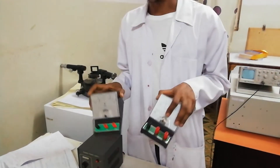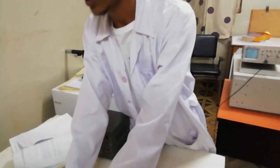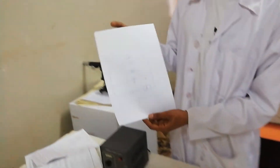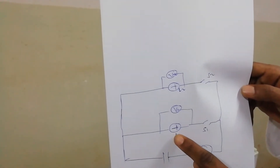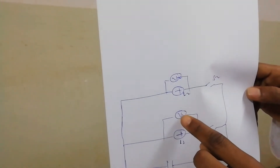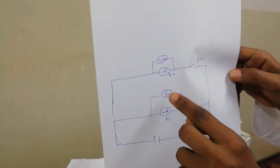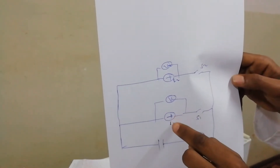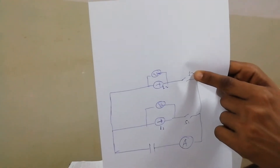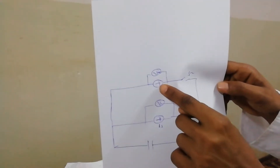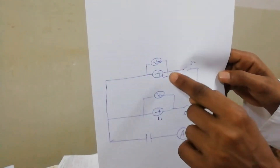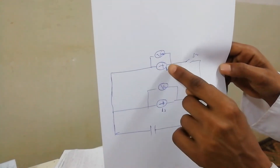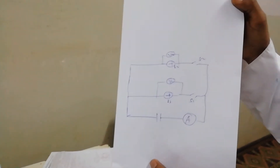This is the apparatus we are using to measure current and voltage in the circuit. In the circuit we are doing today, we have a power supply, an ammeter, a switch, and a light bulb. From the first light bulb, we have voltmeter one, which measures the voltage across bulb one. Then we have switch two, the second light bulb, and voltmeter two, which measures the potential difference across the second bulb.